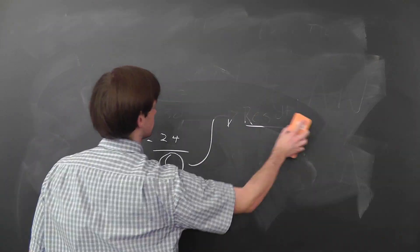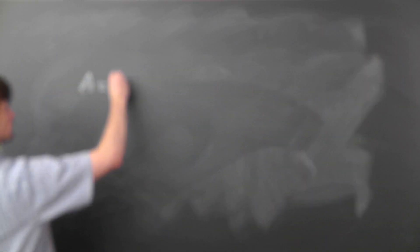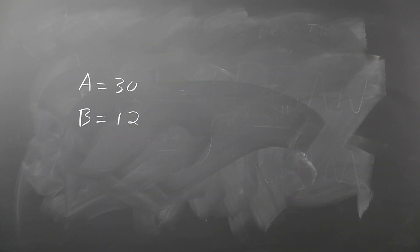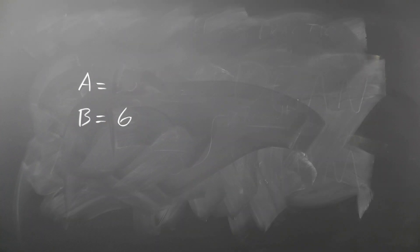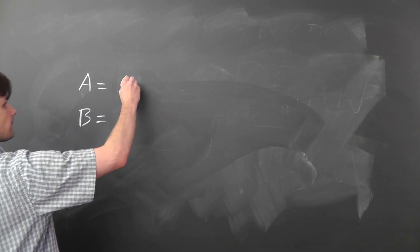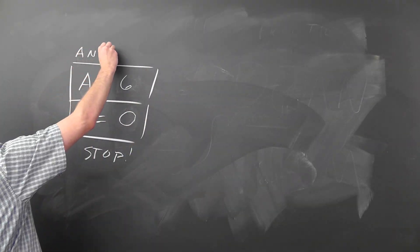In the version of the algorithm that relies on the modulus function, we take two values A and B, and continually say that B equals A mod B, and then we set A to whatever B was before the division. We keep repeating this until B equals zero, and in this case, our greatest common divisor will be A.